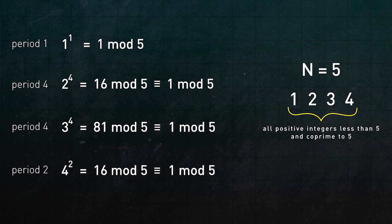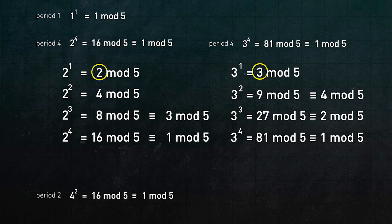Moreover, en route to a value of 1, the mod 5 powers of 2 and 3 will each cycle through all the coprimes of 5. This cycling feature is the linchpin of Diffie-Hellman. And to talk about it concisely, I need to introduce some terminology. So bear with me for a minute, because we need this.